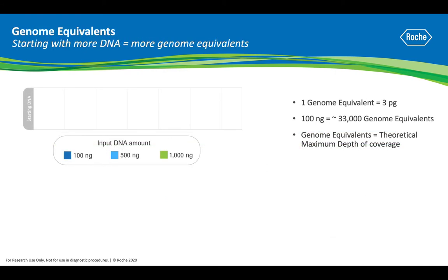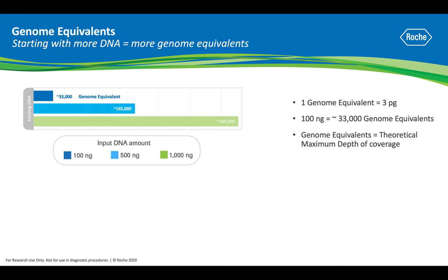Now, let's look at a more typical NGS method using bulk DNA. 100 nanograms of DNA is a typical input amount for many library preps. Since one human genome equivalent is 3 picograms, 100 nanograms of DNA would equal 33,000 genome equivalents going into library prep. 500 nanograms equals 165,000, and one microgram equals 330,000.